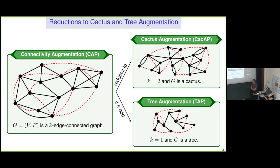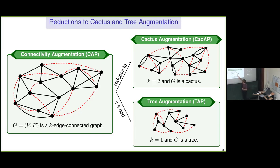One thing I should mention: we're increasing the edge connectivity from K to K+1. It turns out the game becomes significantly easier if K is odd. If your graph is K-edge-connected for an odd K, the structure of the min-cuts is even simpler than a cactus — they form a laminar family, and the problem reduces to what people call tree augmentation. The underlying graph is a tree and you want to cover all its cuts. Min-cuts simply correspond to edges of the tree.